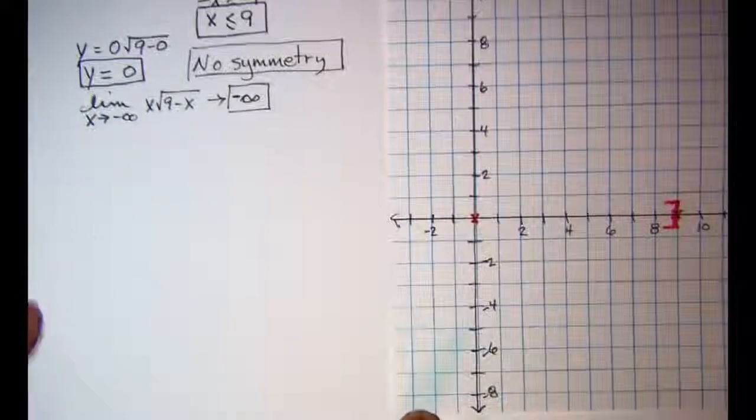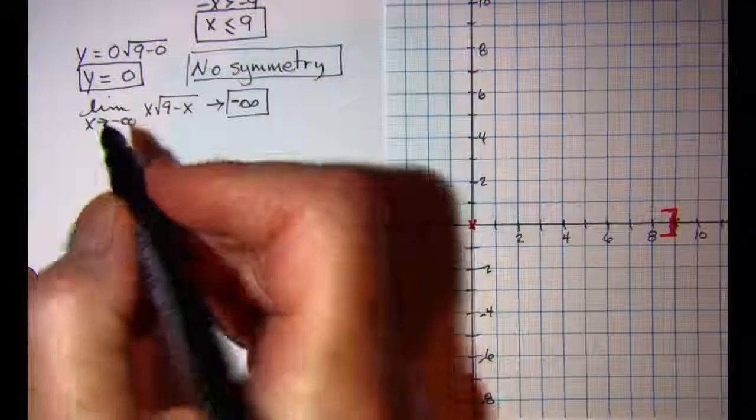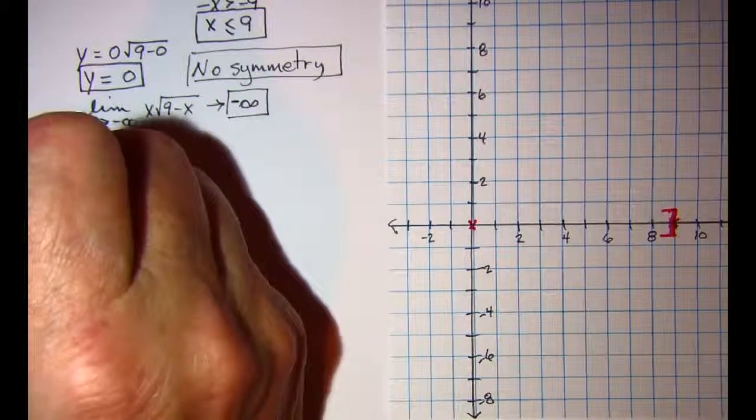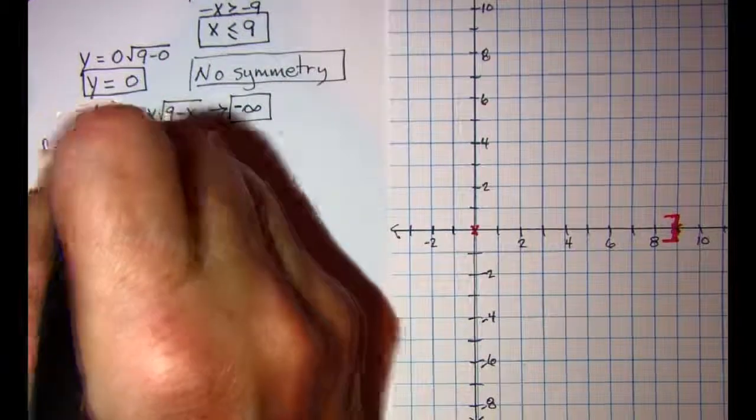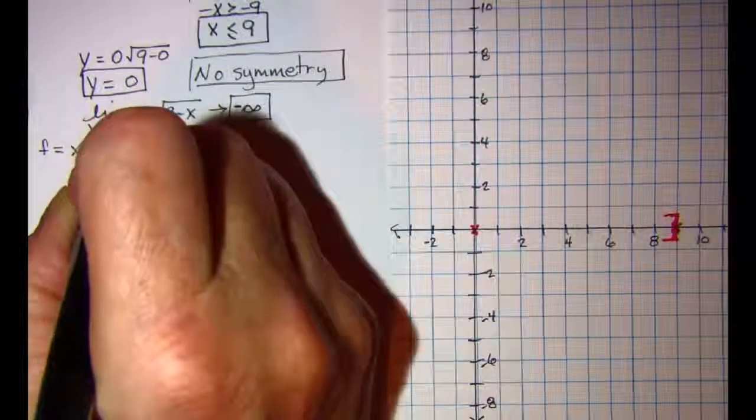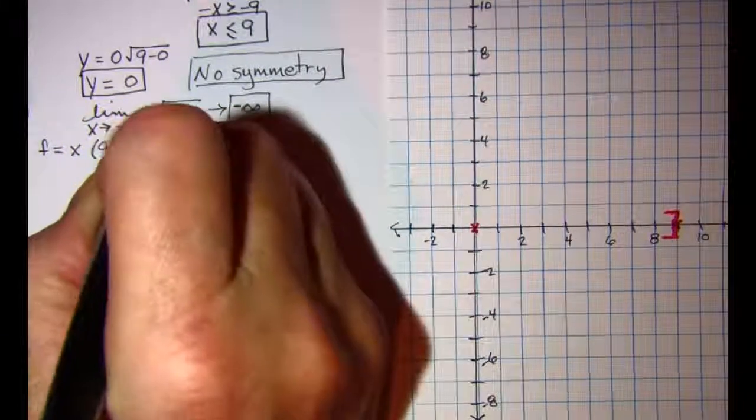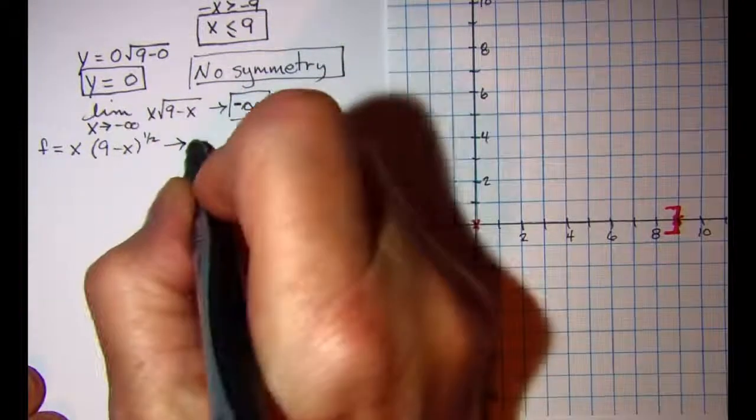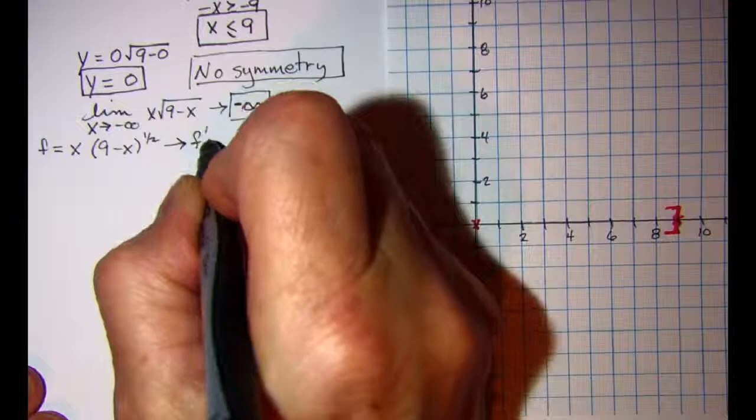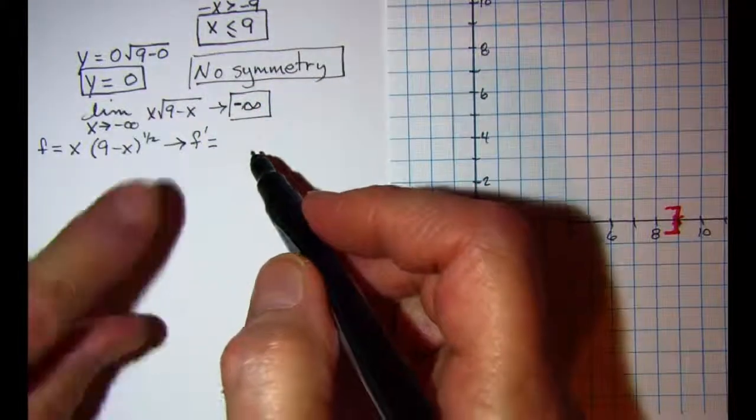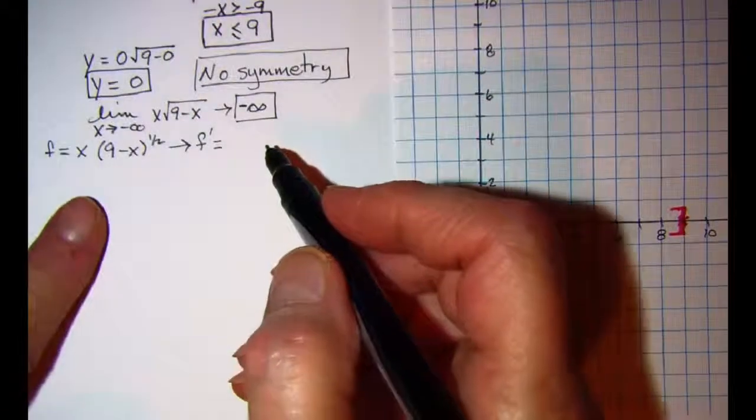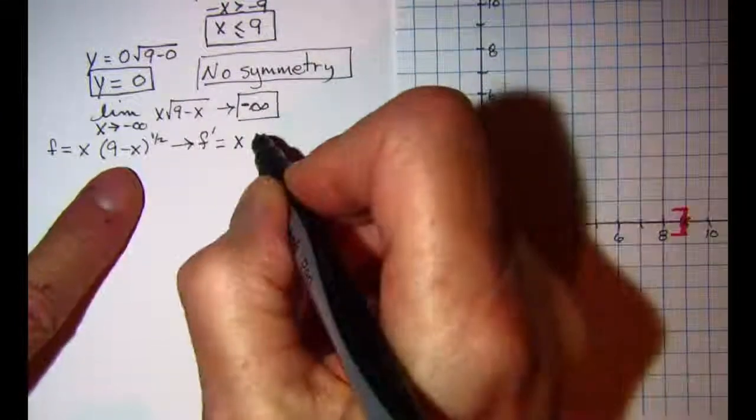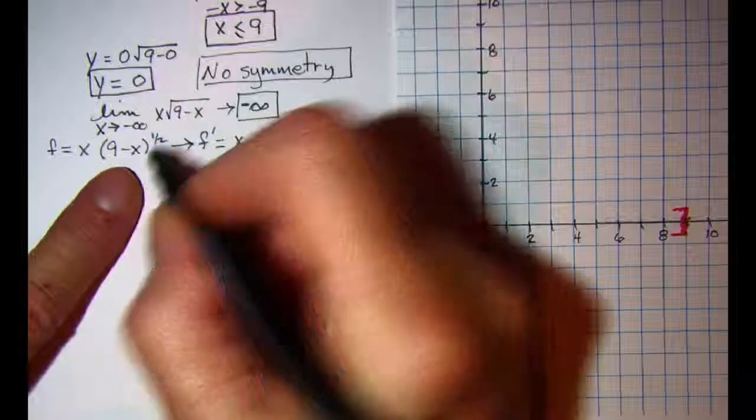Now let's find our derivative. f is equal to x times (9 minus x) to the 1/2 power. So f prime, we'll need to use the product rule. So we have x times the derivative of the second factor.